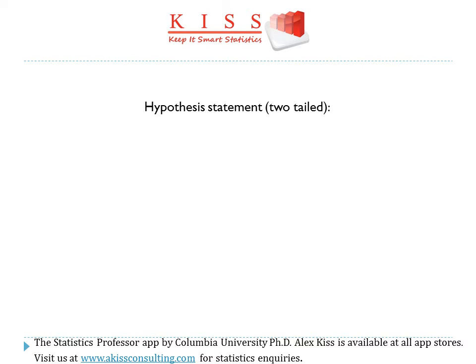The hypothesis statement, which is two-tailed, is H0: mu1, the mean of sample 1, minus mu2, the mean of sample 2, equals 0. Often this is represented by the symbol delta, which means change, so you could have the hypothesis worded as delta equals 0. The alternate hypothesis, Ha, would be that the difference in means mu1 minus mu2 does not equal 0, and likewise it could be represented as delta not equal to 0.